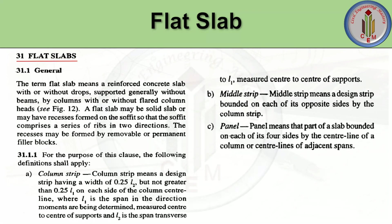As per IS 456-2000 Clause 31, in general it is given that the term 'flat slab' means a reinforced concrete slab with or without drop, supported generally without beams by columns with or without flat column heads. We need to refer to Figure 12 for this — column with column head, column without column head, everything was discussed in the previous video. A flat slab may be a solid slab or may have recesses formed on the soffit so that the soffit comprises a series of ribs in two directions.